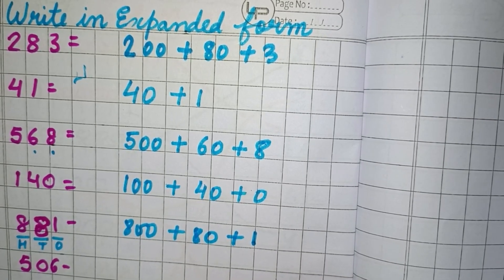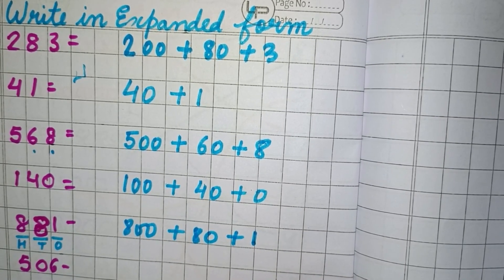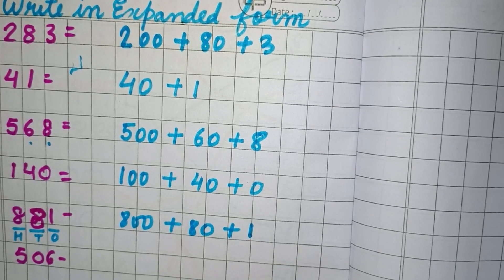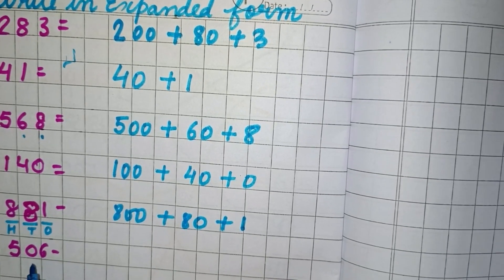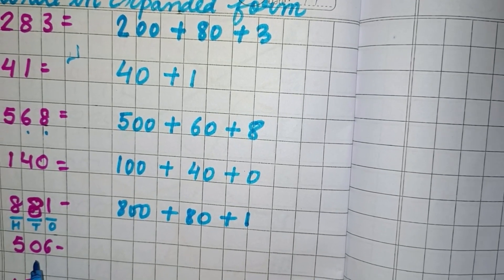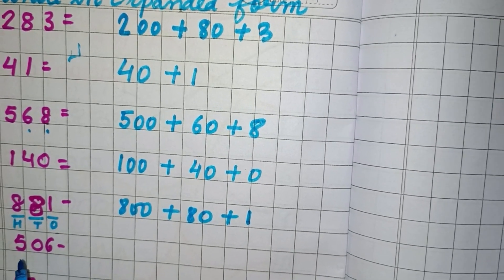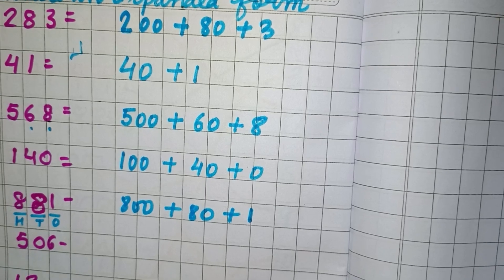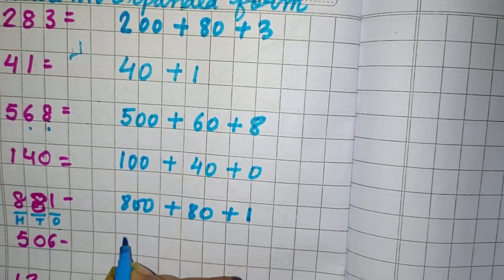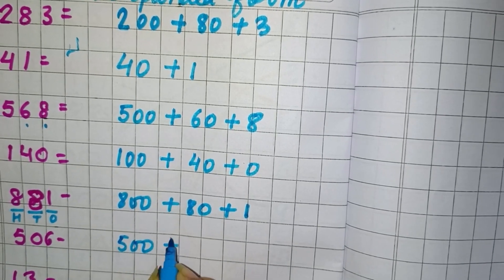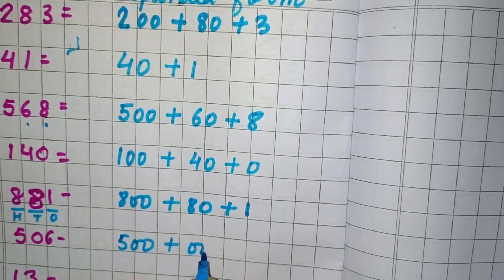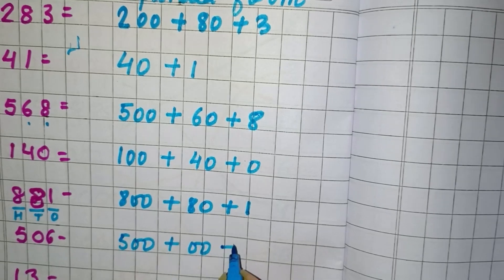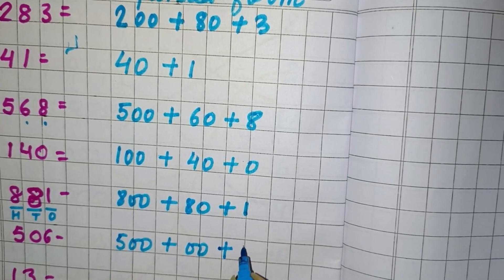Now next we have 506. So we can see 6 is in 1's place, 0 is in 10's place, and 5 is in 100's place. So we will write 500 plus 0 plus 6.